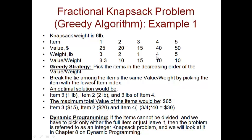Next is item 4, which weighs 4 pounds, but we can only accommodate 3 more pounds. So we break the item and take three-fourths of it, and its value decreases proportionately. We take 3 pounds of item 4, so its value is 3/4 of $40 = $30. The total value is $15 + $20 + $30 = $65.